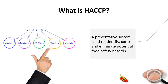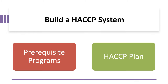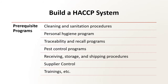It is a progressive method of identifying hazards in the production of food and implementing control measures to prevent, eliminate, or reduce these hazards to an acceptable level. To build and implement a HACCP system requires that prerequisite programs and HACCP plans are implemented. The prerequisite programs are programs that are put in place in the company to control hazards in the environment and prevent contamination of the product.